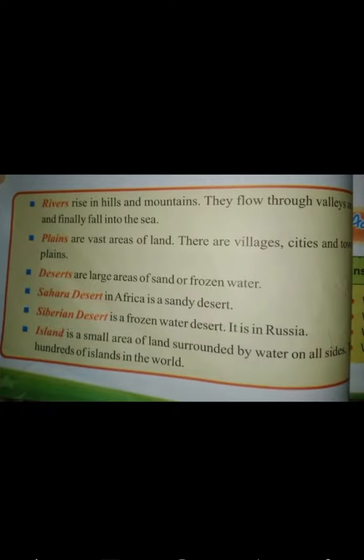Rivers rise in hills and mountains. They flow through valleys and plains and finally fall into the sea. The source of a river is usually found in high places such as hills and mountains, and in the end all rivers fall into the sea. Plains are vast areas of flat land — they cover more than one third of the world's land area. There are villages, cities and towns in plains.